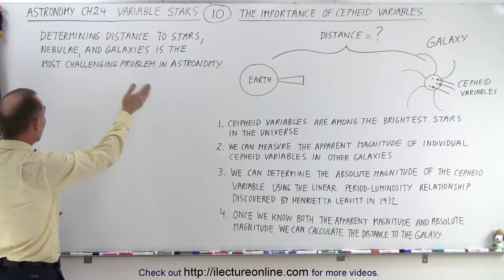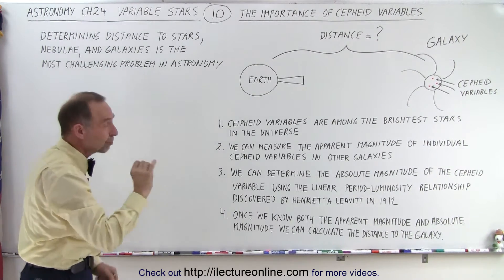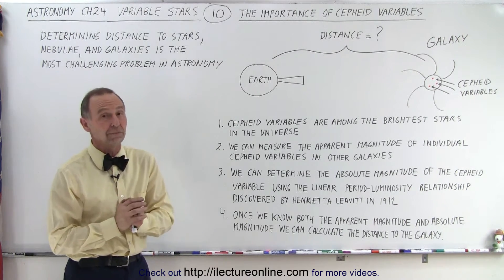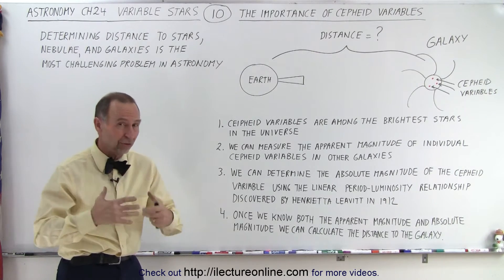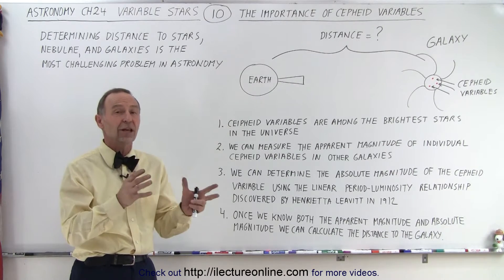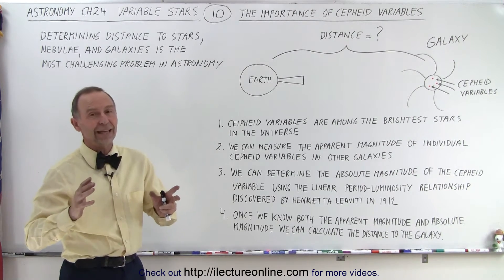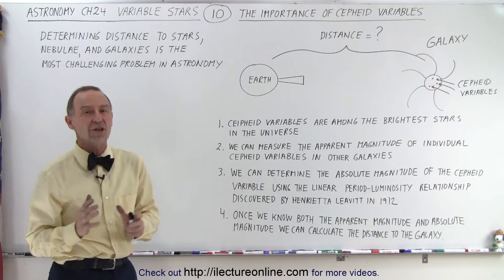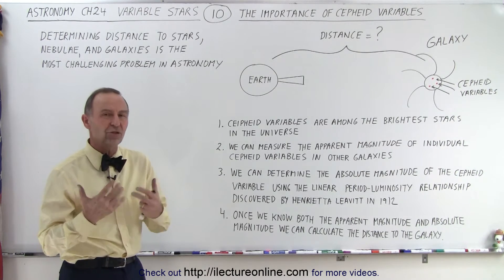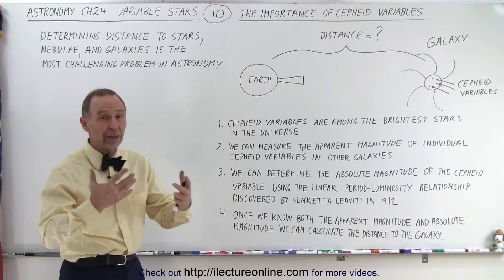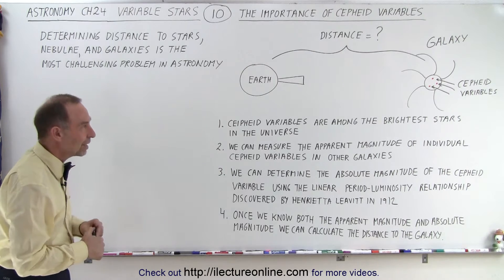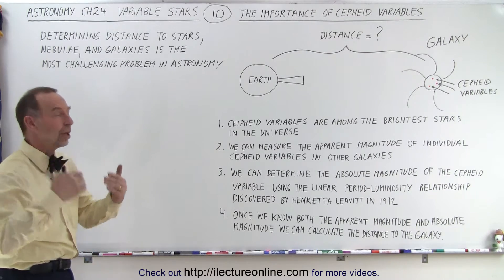Determining the distance to stars, nebulae, and galaxies is the most challenging problem in astronomy, and it's been that way for thousands of years. When the Greeks tried to determine the distance to the moon and the sun, that was very challenging. Their first estimate for the distance to the sun was way off, and they weren't able to improve upon that for almost 2,000 years. It has been a challenging problem to figure out the distance to stars, nebulae, and other galaxies. We'll show you some interesting things we have to go through in history in order to establish all the knowledge that we have now.